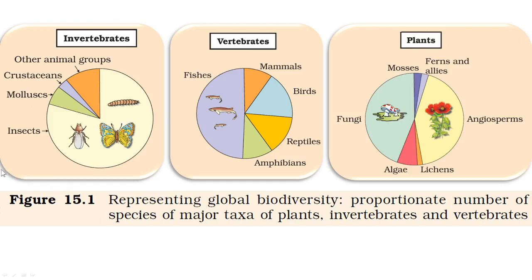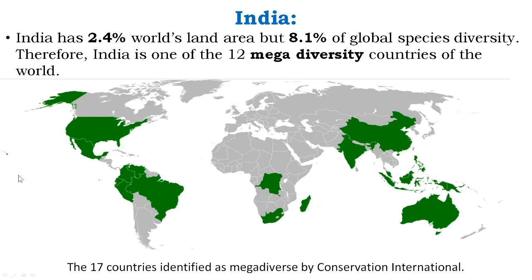Regarding species diversity in India: India has only about 2.4% of the world's land area, but contributes about 8.1% of global species diversity. This means that with a small proportion of land, India has a disproportionately large share of global biodiversity. Therefore, India is considered one of the 12 mega diversity countries in the world.